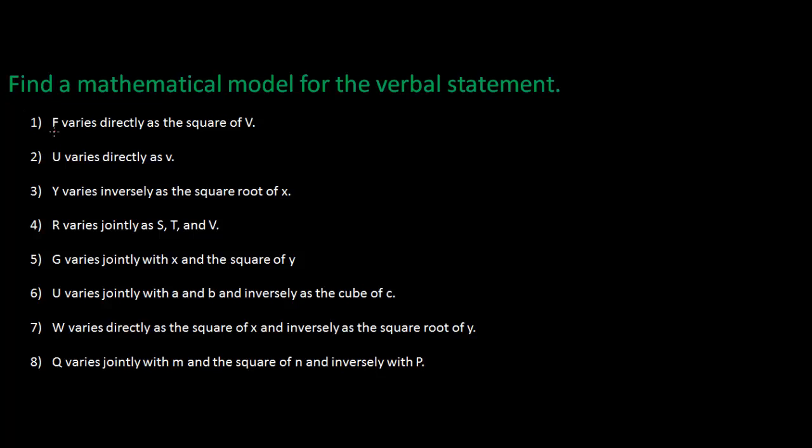For number one, F. I like to write it as I read it, so F varies directly, that means equals K as the square of V, so I take V and I square it.